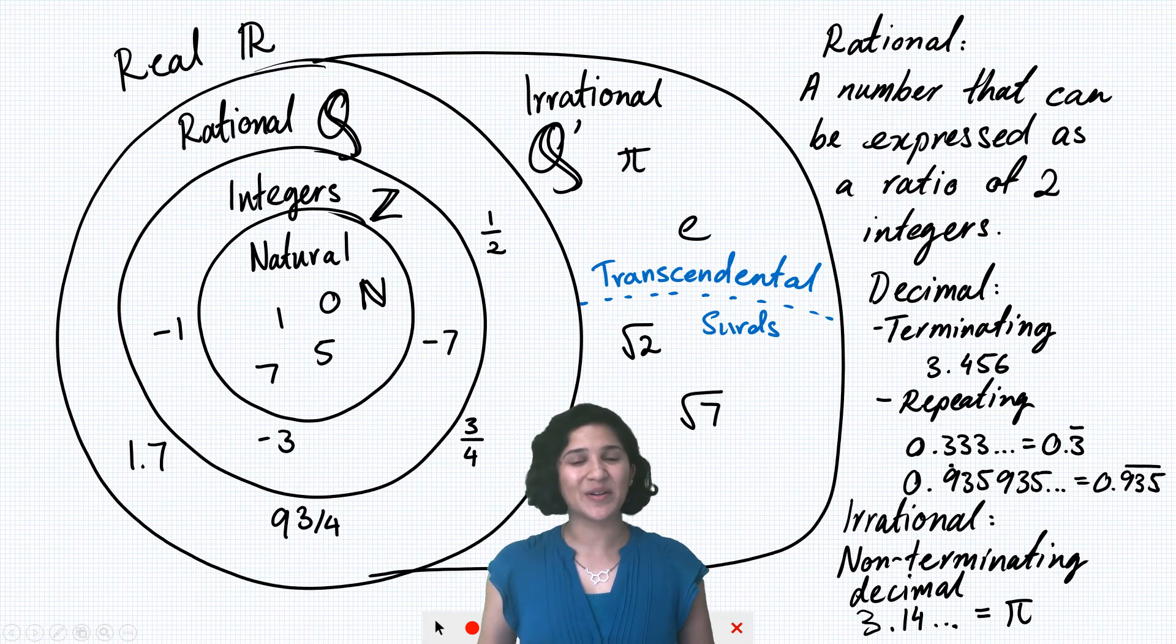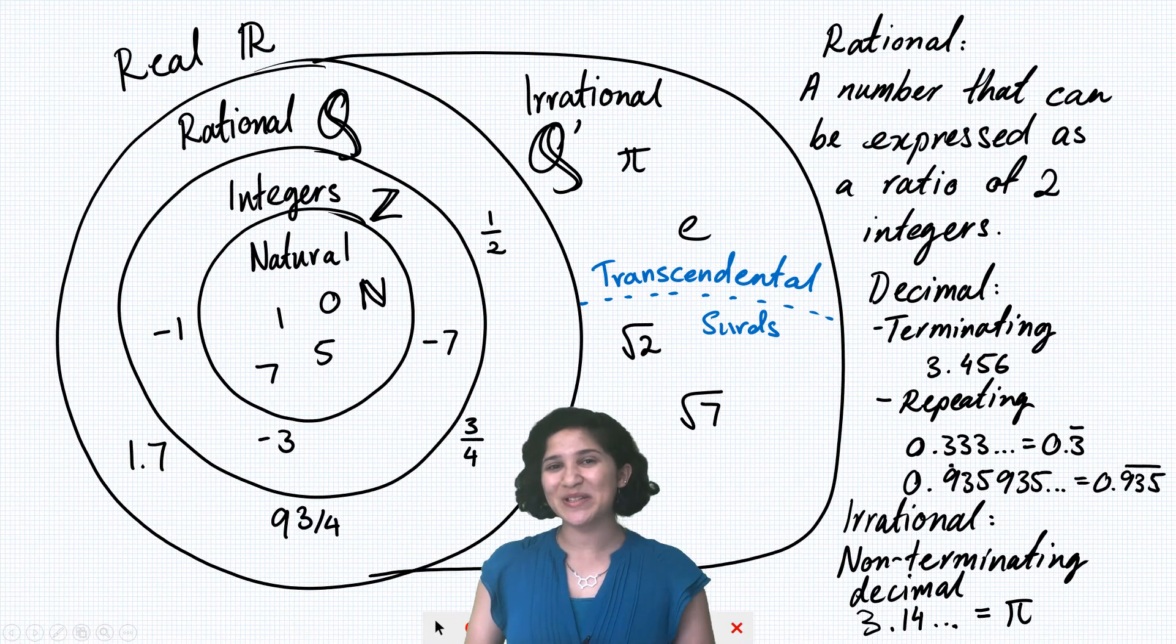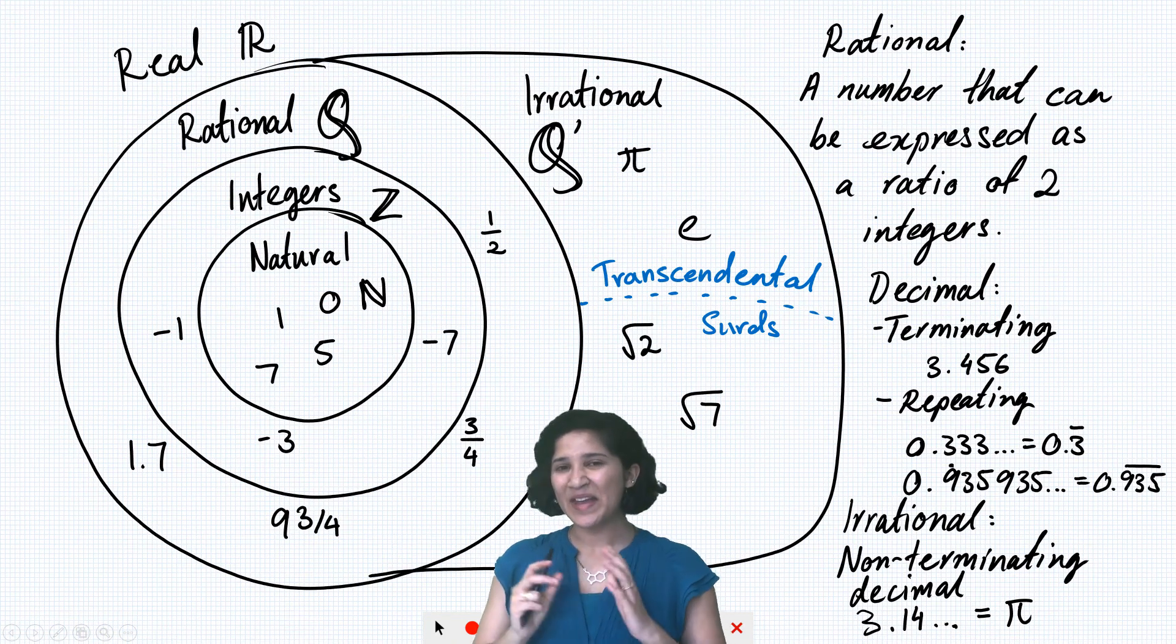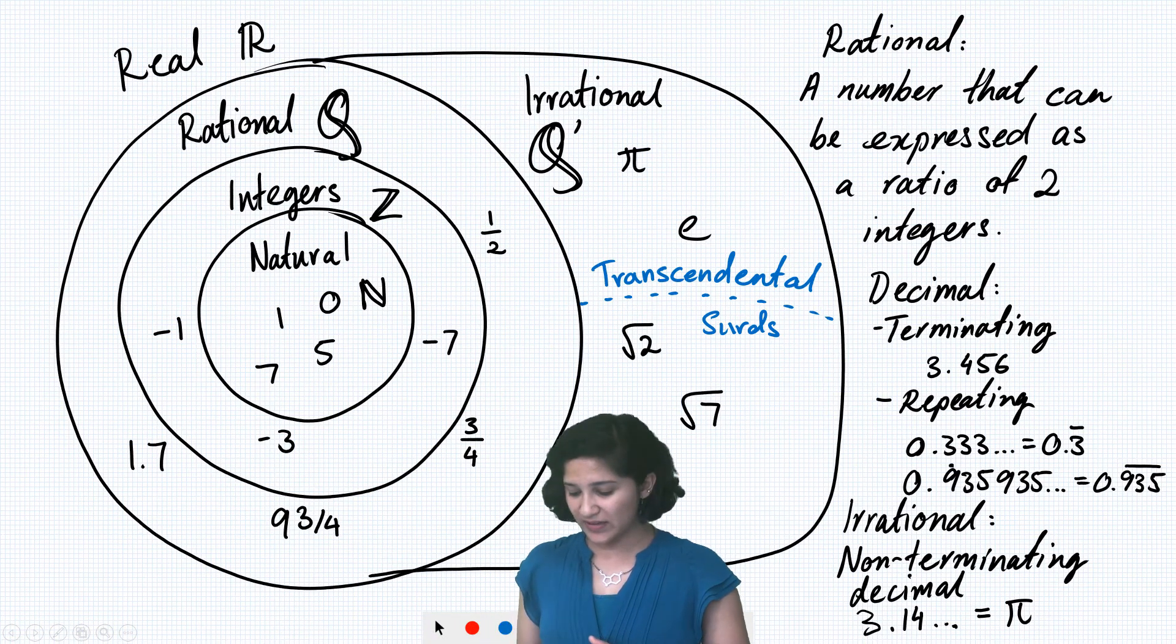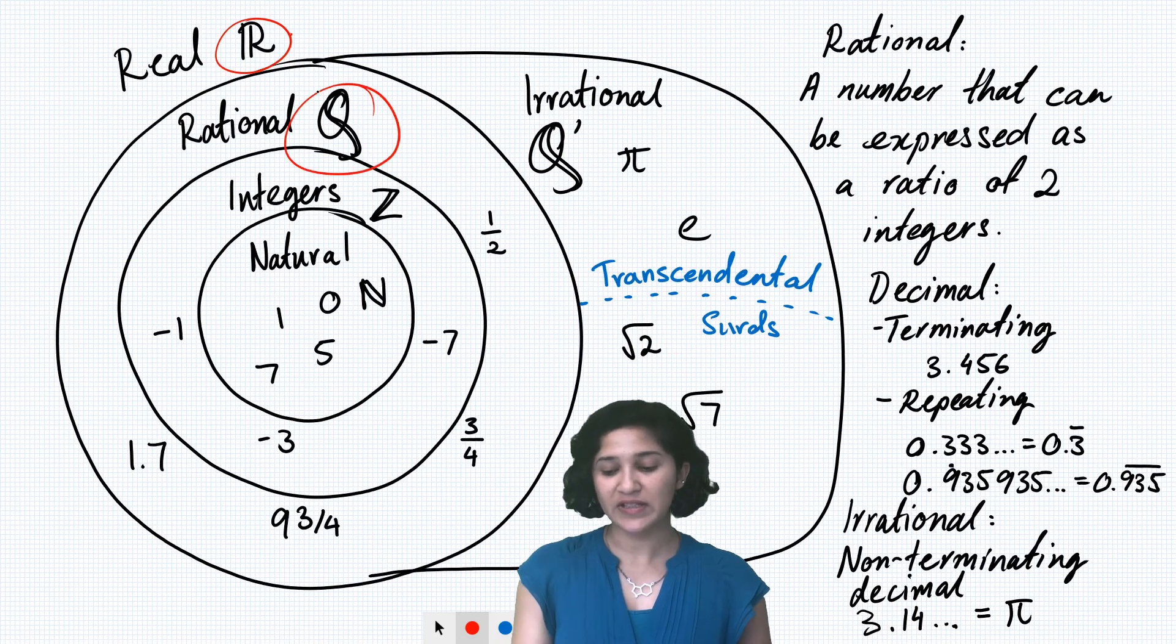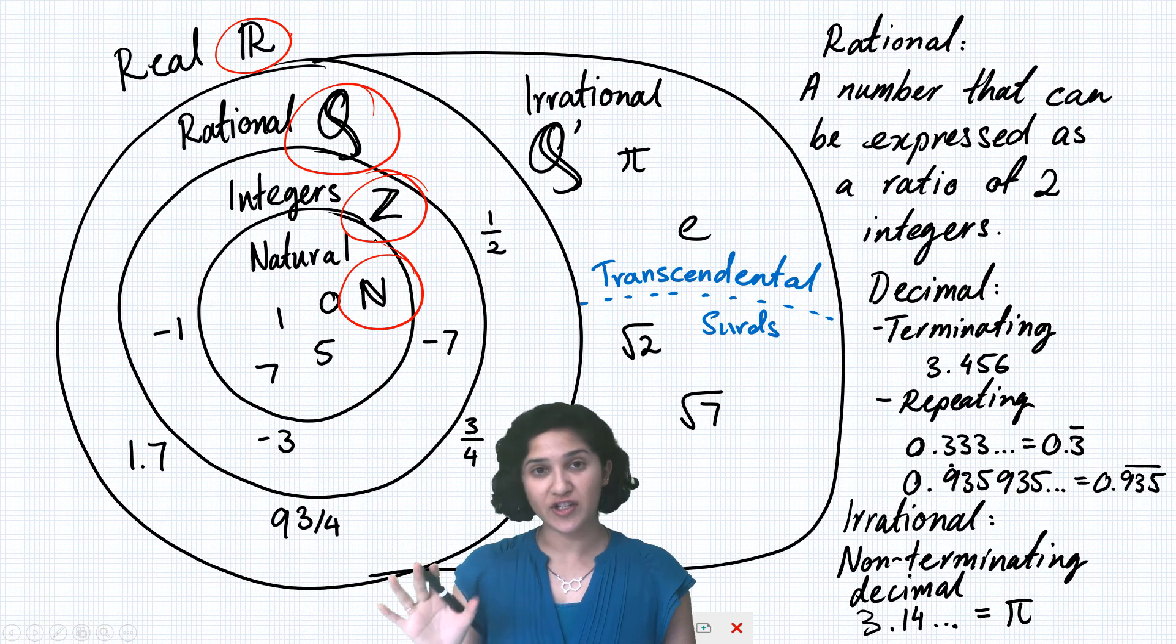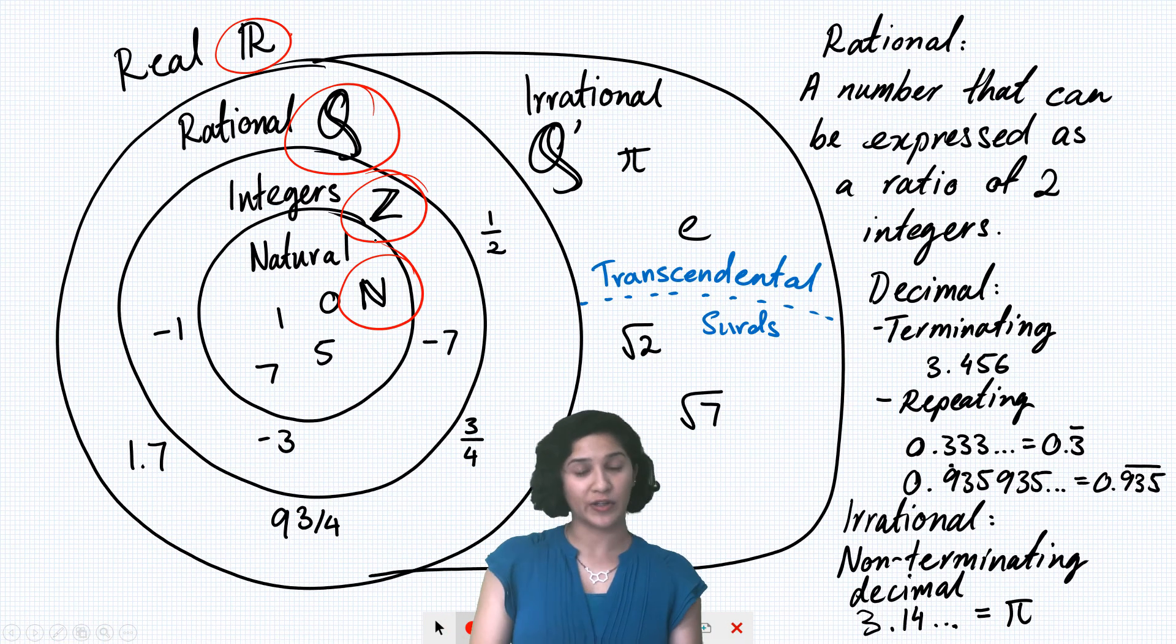So these are all the types of numbers that you need to know in year 10. If you do do specialist maths, you'll learn one more type of numbers, which is called complex numbers. And if you've ever heard of the number i or imaginary numbers, that's what I'm talking about there. But otherwise, with these numbers, you'll be set. So the important things to remember are what each of them is called and what each of the symbols are, especially the ones that aren't obvious. It's also really important to know the definition of rational and irrational and be able to tell whether a given number is rational or irrational.